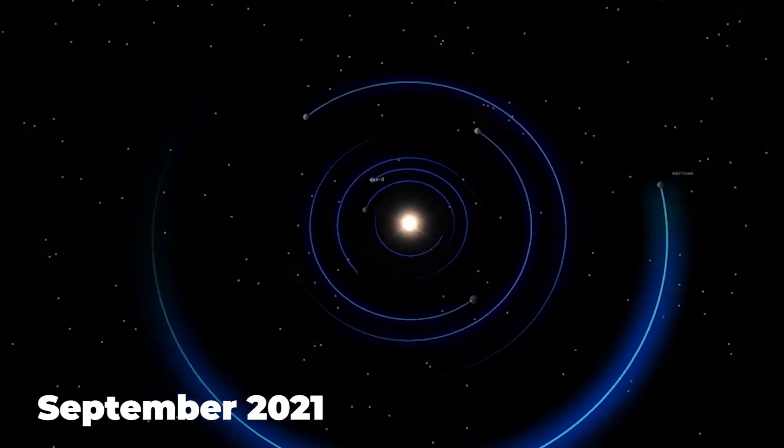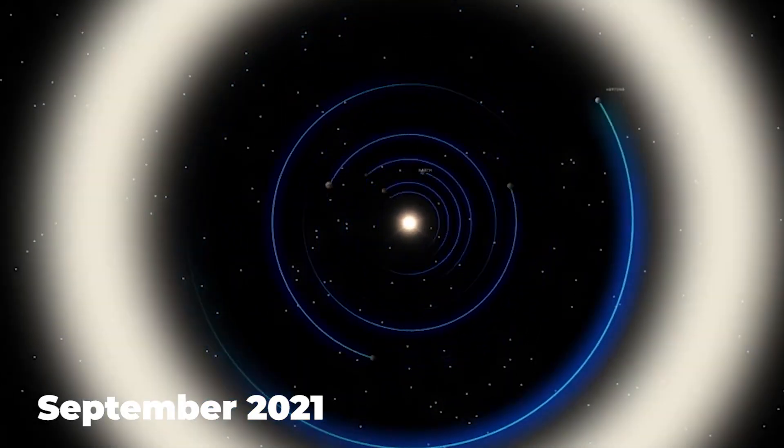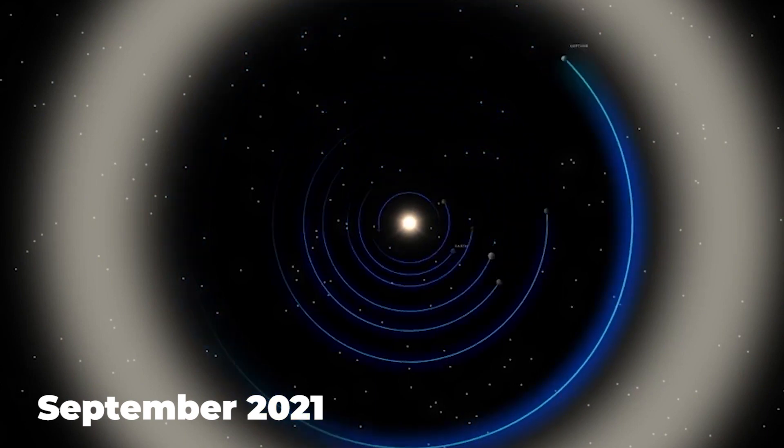A study released in September 2021 reveals that Planet 9 may be closer to the sun than the original models indicated.